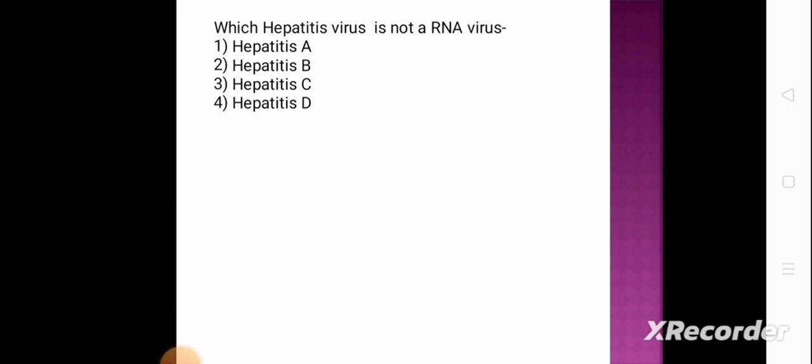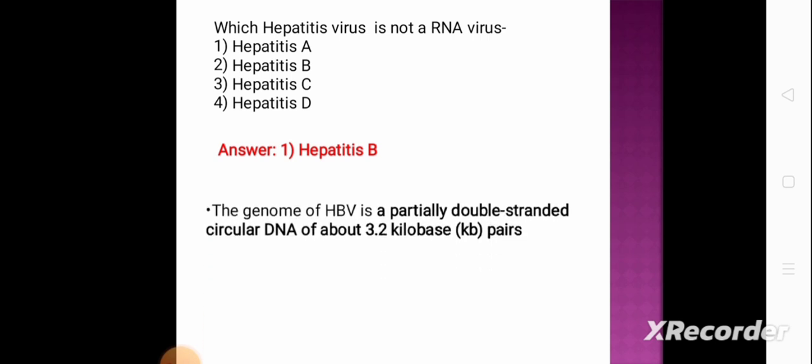Next question: which hepatitis virus is not an RNA virus? Option 1: hepatitis A, option 2: hepatitis B, option 3: hepatitis C, option 4: hepatitis D. The correct answer is hepatitis B. The genome of HBV (hepatitis B virus) is a partially double-stranded circular DNA of about 3.2 kilobase pairs. Thank you, please like, share, and subscribe to this channel.